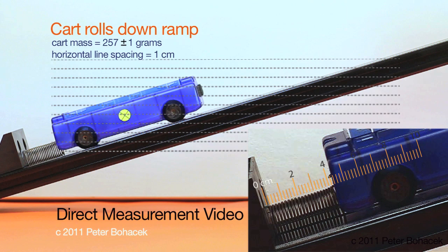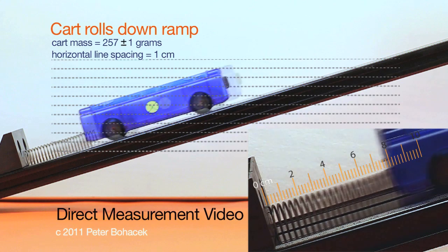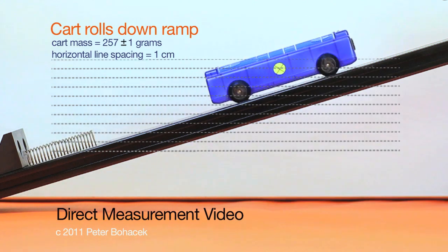Students can make measurements to compare the potential energy that the cart had at the top of the ramp with the energy stored in the spring when the cart's at the low point. From there, for example, they can calculate the force constant of the spring.